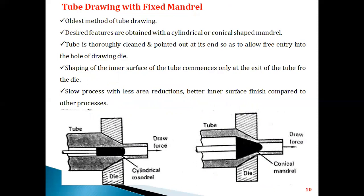The next method is tube drawing with a fixed mandrel, sometimes called one of the oldest methods of drawing. Here we use a mandrel, but its position is fixed near the die cavity. The mandrel can be cylindrical or conical in shape. Whatever internal structure is desired — whether cylindrical or conical features — it can be developed using these shaped mandrels, which are fixed near the die cavities.